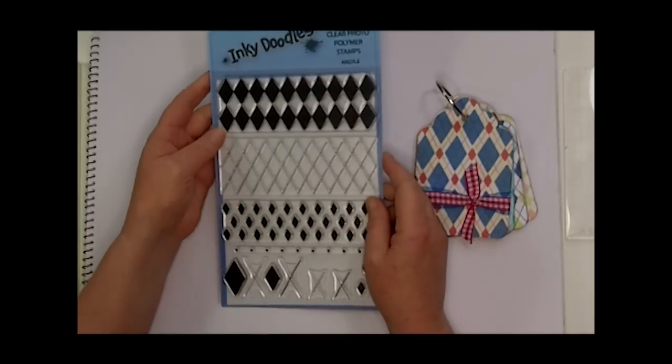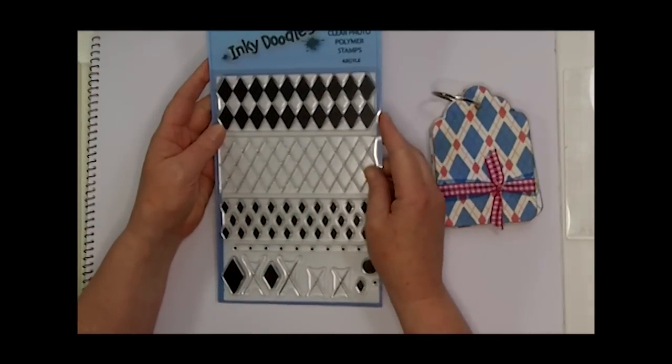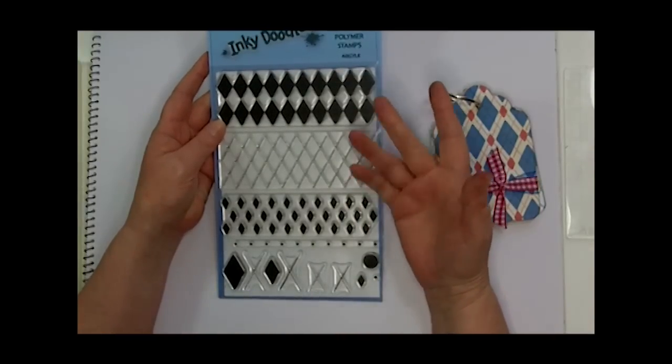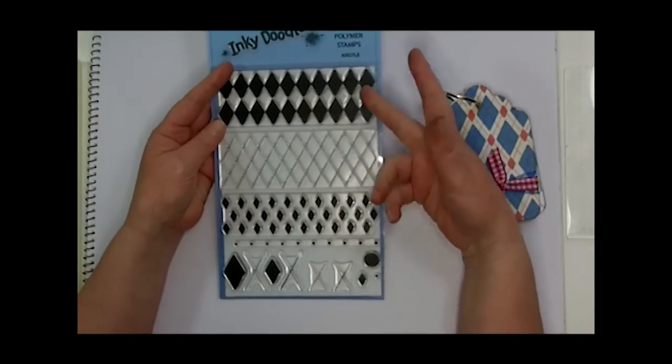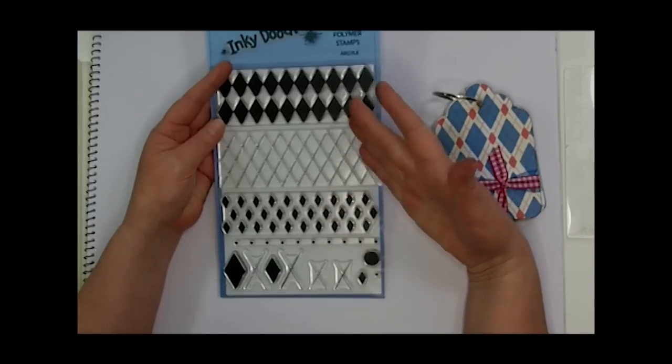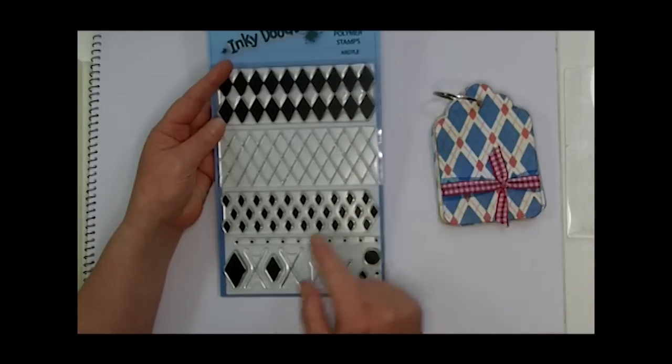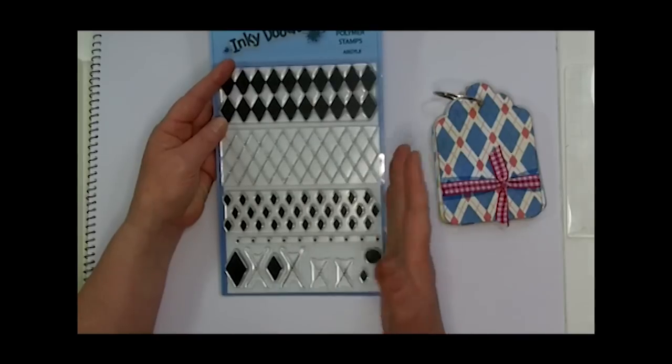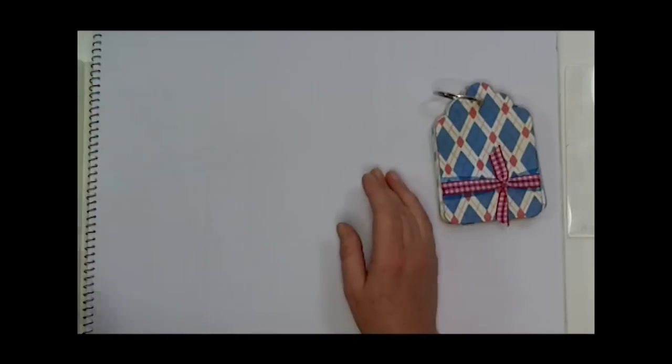Hello everyone, it's Sarah here from Inkydoodles. Today I want to have a little look at the Argyle stamp set that we have. As you can see it's got three large background ones that you can use to build up various patterns. You've got a line of dots and all these various little bits here. At first glance you might think, well what can I do with that?